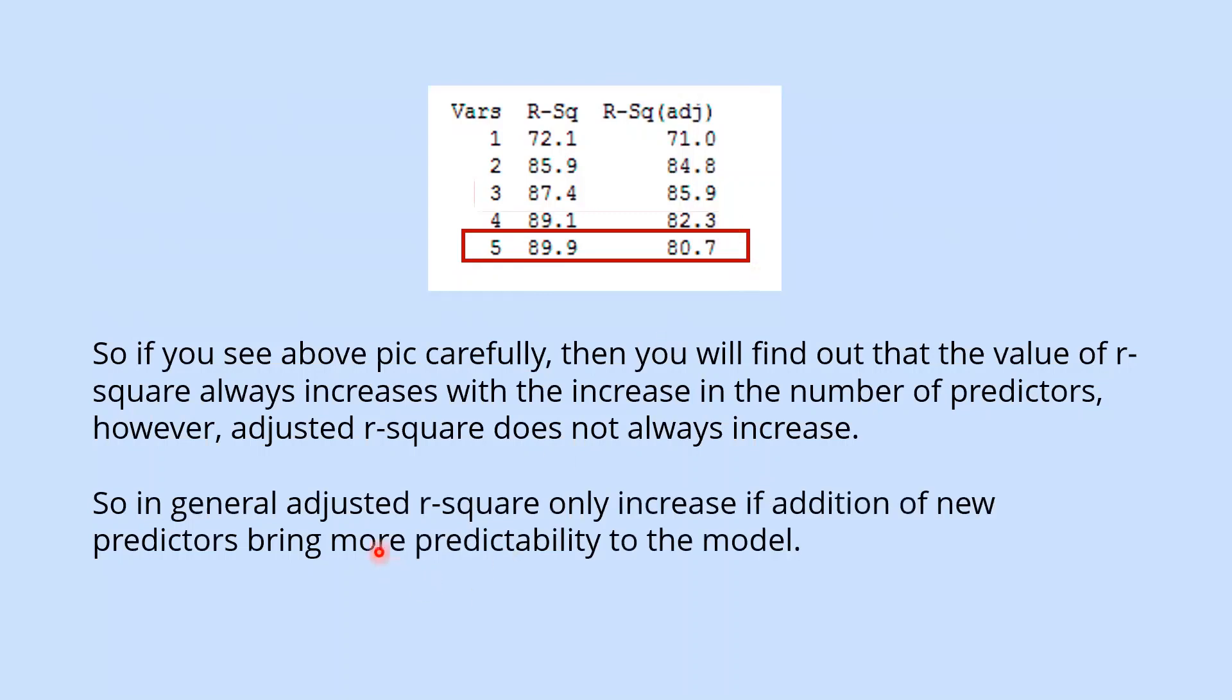So in general, adjusted R2 only increases if addition of new predictors bring more predictability to the model. It means that new predictor has significant impact on target variable.